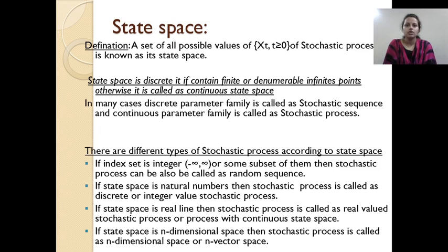State space: the set of all possible values of the stochastic process. Based on the range of state space, there are two types. If it contains finite points, it is called a discrete state space; otherwise, it is called a continuous state space. The discrete parameter family is called a stochastic sequence, while the continuous parameter family is called a stochastic process. So we divide stochastic into stochastic sequence and stochastic process.